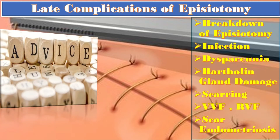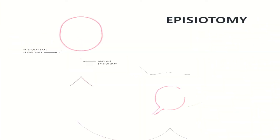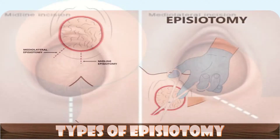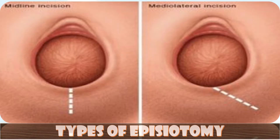The types of episiotomy include: first, mediolateral episiotomy, which is a cut from the vagina at an angle off to one side of the anus; and the midline episiotomy, which is a cut from the vagina directly toward the anus.